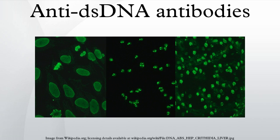Anti-dsDNA antibodies are highly associated with glomerulonephritis in SLE, although some patients with high titers of anti-dsDNA antibodies do not develop renal disease. This is most likely due to the fact that anti-dsDNA antibodies are a heterogeneous population, some of which have been found not to be pathogenic. Anti-dsDNA antibodies can be present in normal individuals; however, these antibodies are usually low avidity IgM isotype. In contrast, pathogenic anti-dsDNA antibodies found in SLE are usually of IgG isotype and show high avidity for dsDNA.